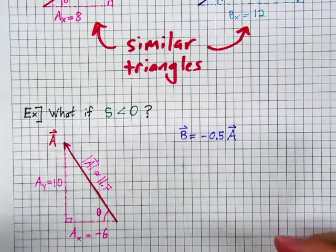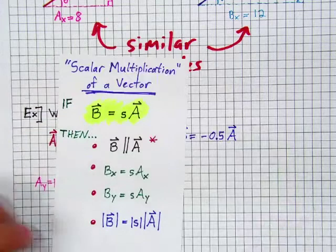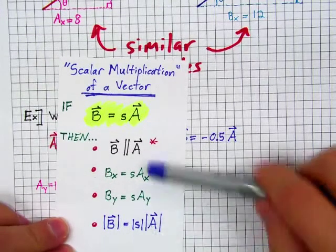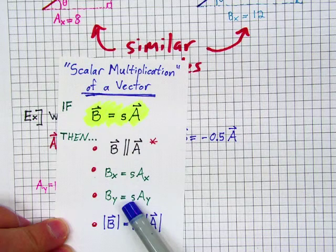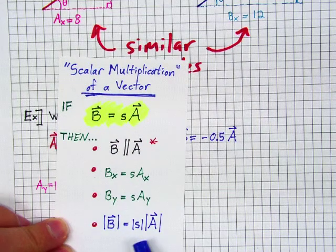What then happens? What does vector b look like? Well, these rules here will still apply. bx will be negative 0.5 times ax, and by will be negative 0.5 times ay, and b will be 0.5 times a.